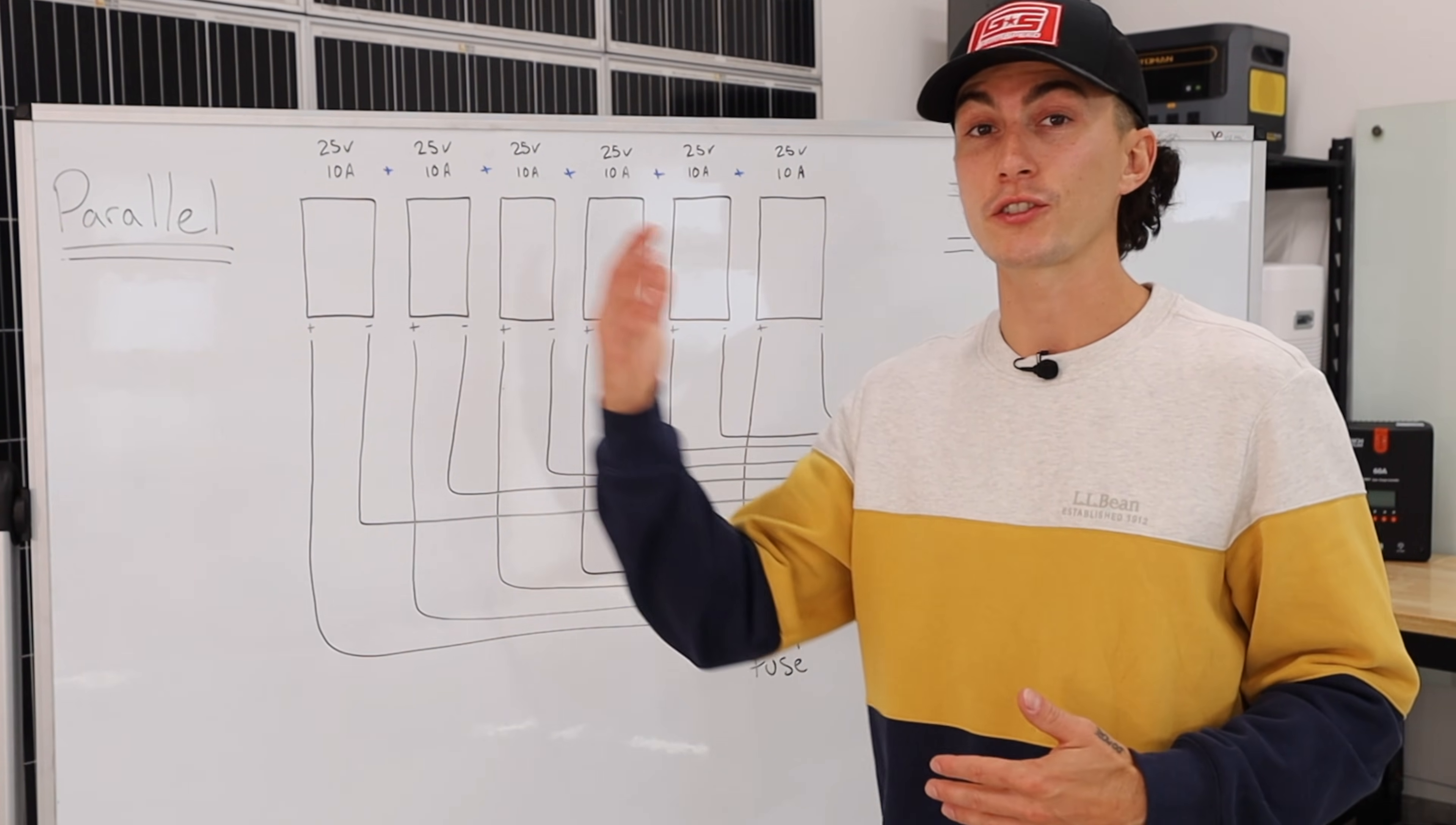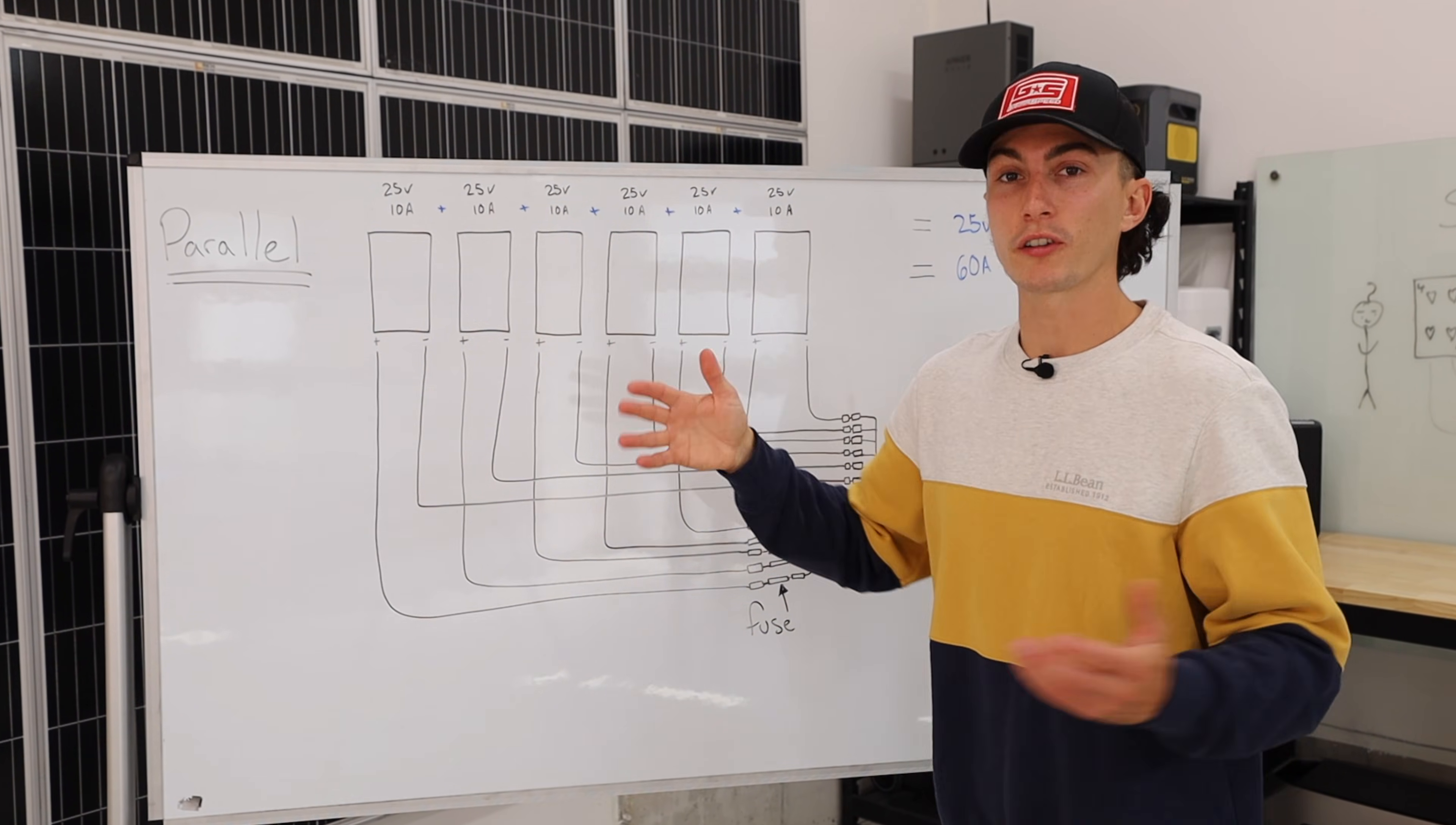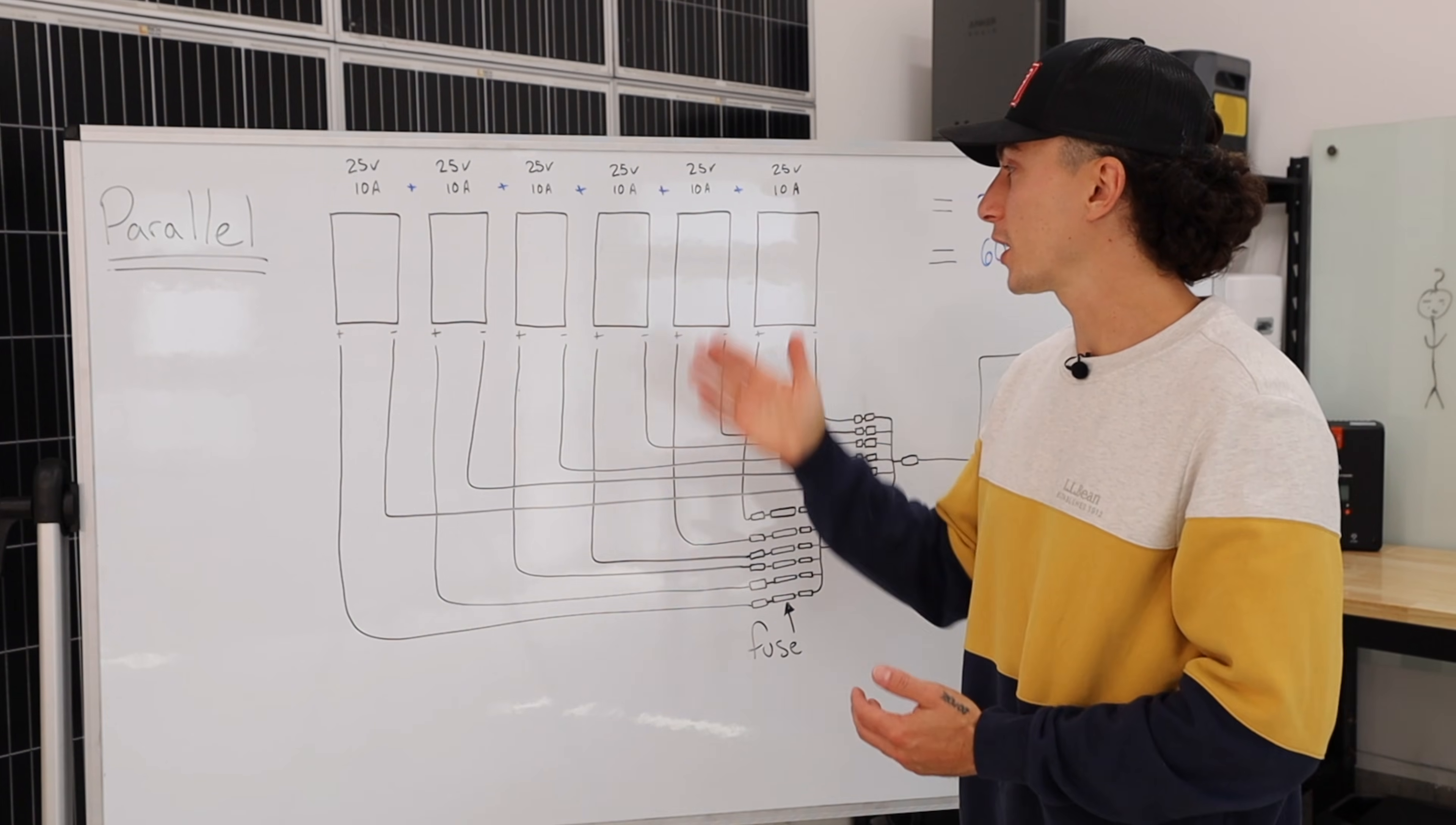When it comes to pros of a setup like this, it's very clear that all these panels are standing on their own—they're individual. So if you have shade blocking this one, it only affects the input on these wires. All the other panels remain unaffected. Same thing if one of them malfunctions—you're not going to have such an impact on your total solar production from your entire array.